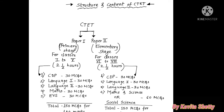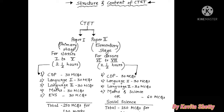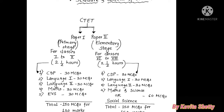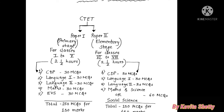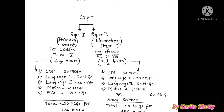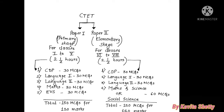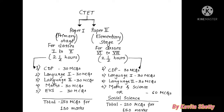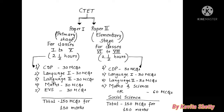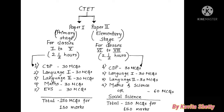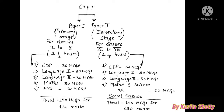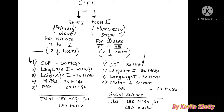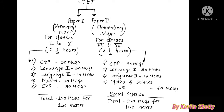For Paper 1: Child Development and Pedagogy (CDP) has 30 MCQs for 30 marks, Language 1 has 30 MCQs, Language 2 has 30 MCQs, Mathematics has 30 MCQs, and EVS has 30 MCQs — totalling 150 MCQs for 150 marks. For Paper 2: CDP, Language 1, Language 2 have 30 MCQs each, while Maths and Science or Social Science has 60 MCQs. For Maths and Science, it is 30 MCQs each; for Social Science it is 60 MCQs — again totalling 150 marks.